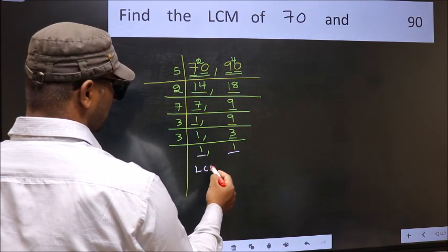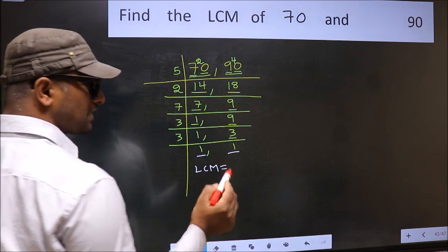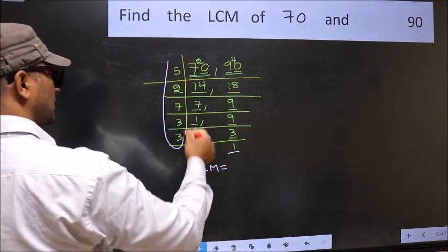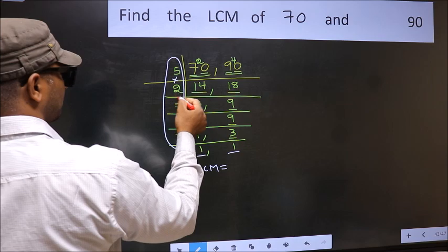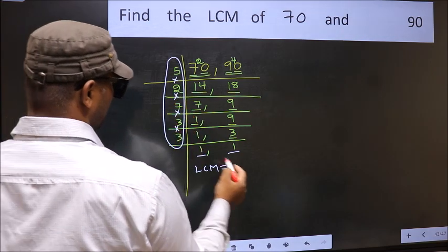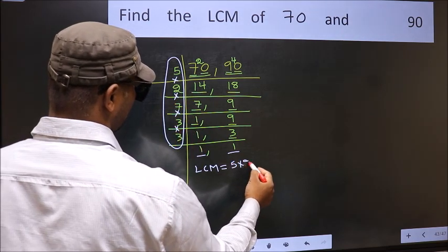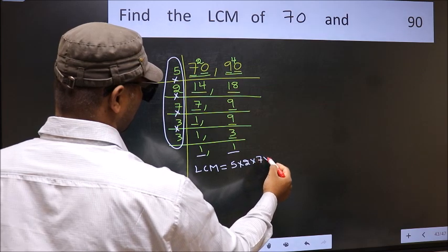So our LCM is... LCM is the product of these numbers. That is 5 into 2, into 7, into 3, into 3.